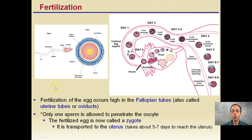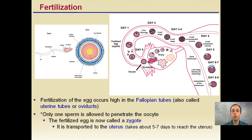The fertilization process occurs when the egg is in the fallopian tubes and a sperm meets that egg. Only one sperm is allowed to penetrate the oocyte. The fertilized egg is now called a zygote, which is transferred to the uterus — a transportation process that may take about five to seven days. It will attach to the uterine wall, where the zygote will form into a fetus and develop into a baby. Fertilization can only occur in the fallopian tubes; by the time it reaches the uterus, if fertilized, it attaches and development begins. Hopefully this gives you a brief overview of the male and female reproductive systems.